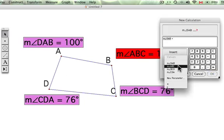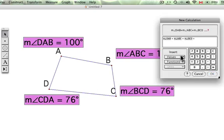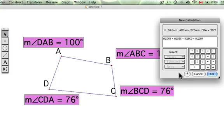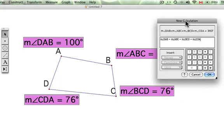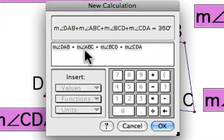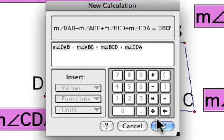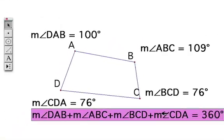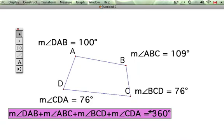So angle DAB plus ABC plus BCD plus CDA, and so now we've added all of the four different angle measures, and we get a sum of 360 degrees.